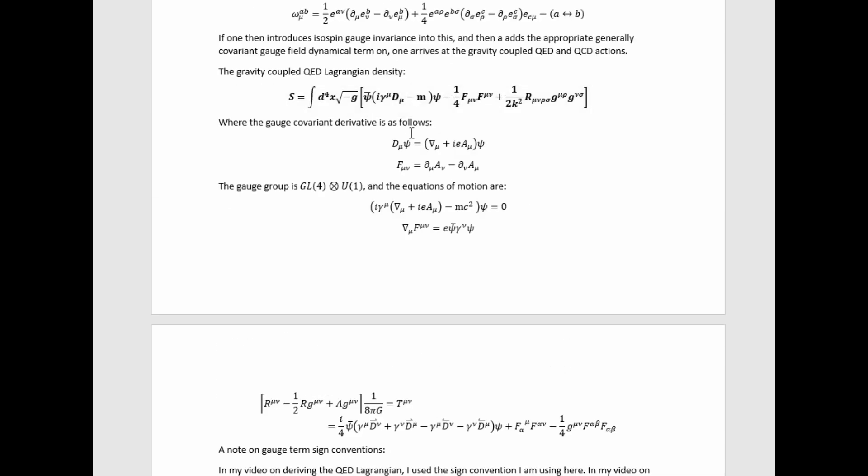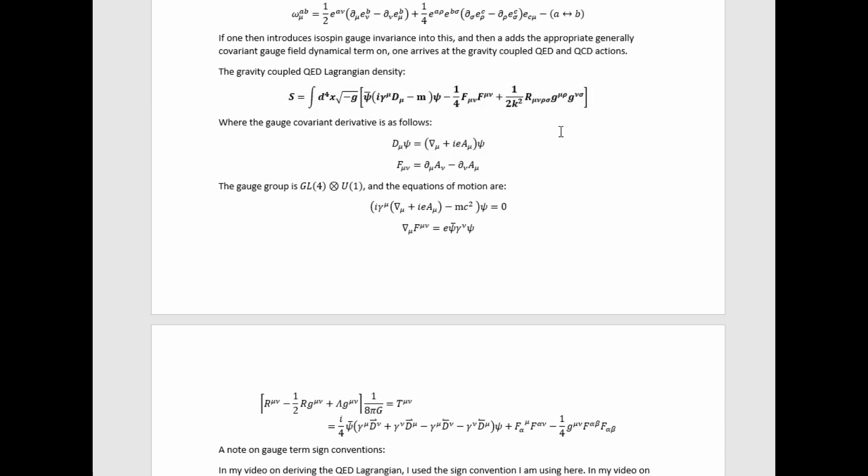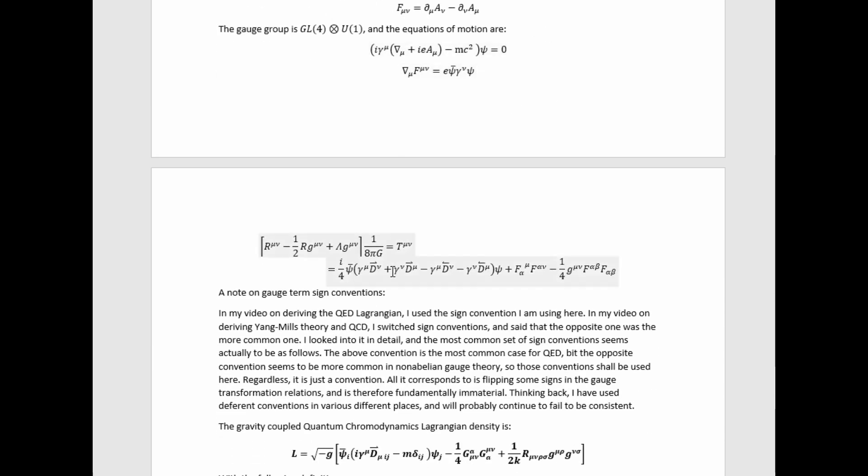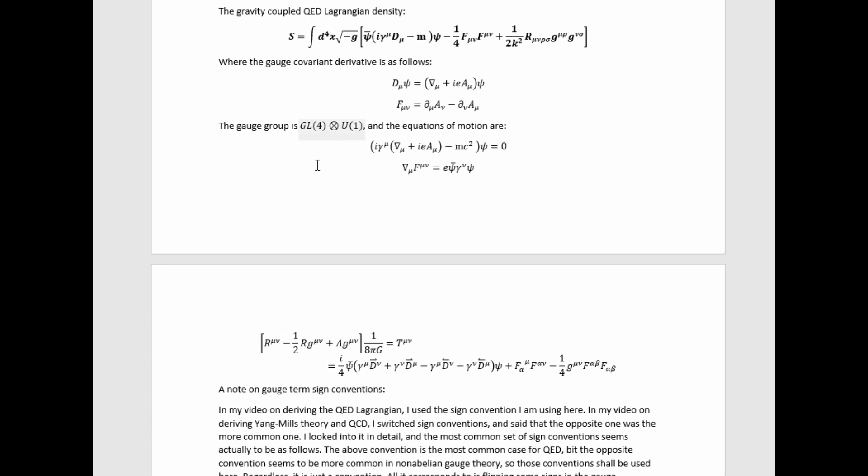Then if we vary this with respect to the spinner field, the electromagnetic field, and the metric tensor, we get these equations of motion. And of course, because we've got U1 gauge invariance and GL4 invariance, which is also gauge invariance, we have the gauge group GL4 direct producted with U1,